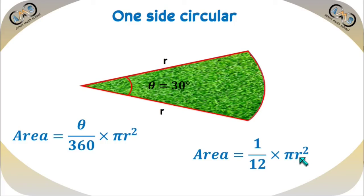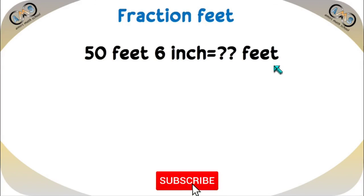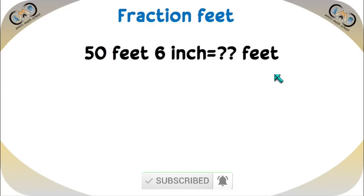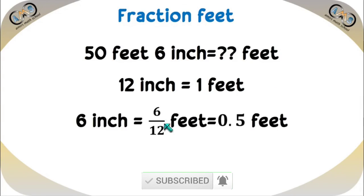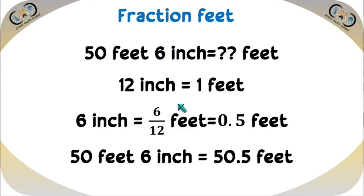If we get the value of r, just substitute it here along with pi equals 3.14159 or 3.1416, and we will easily get the area. Now, for the conversion of fractional feet: 50 feet 6 inches equals how many feet in decimal? We know 12 inches equals 1 foot, so 6 divided by 12 equals 0.5. Therefore, 50 feet 6 inches equals 50.5 feet. In this way, we can convert inches to feet by dividing the inch part by 12 to get the fractional feet.